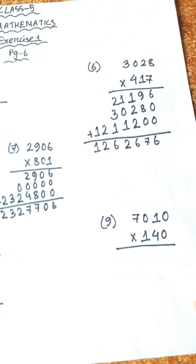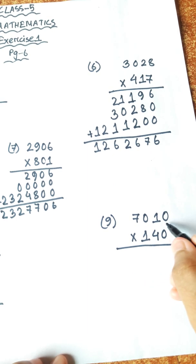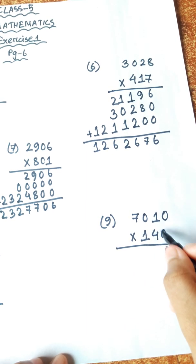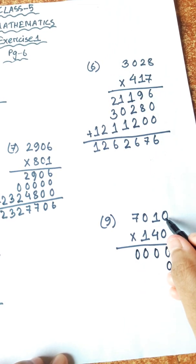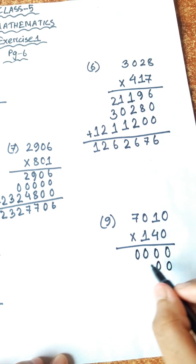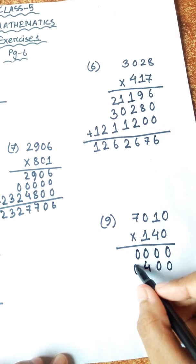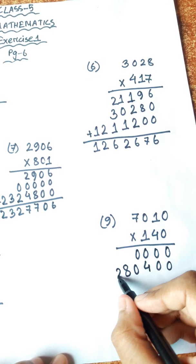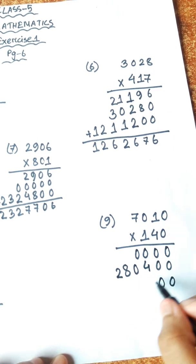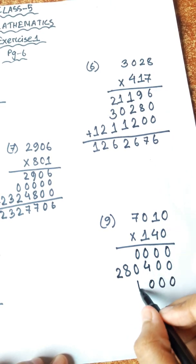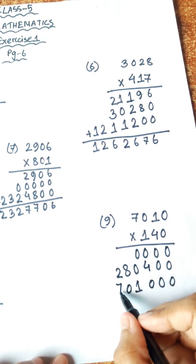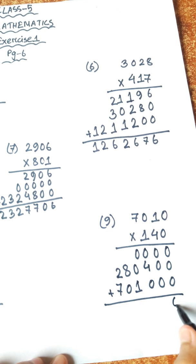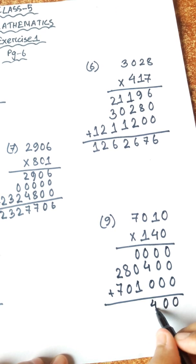Last problem, Number 9: 7010 × 140. Steps: 0, 0, 0, 0, 1, 0, 0, 0, 0, 0, 0, 0, 0, 7, 0, 0, 0, 0, 0. Then: 4, 0, 0, 0, 4, 1, 0, 4, 0, 0, 0, 7, 4, 0, 0, 0. Then: 1, 0, 0, 0, 1, 0, 0, 0.